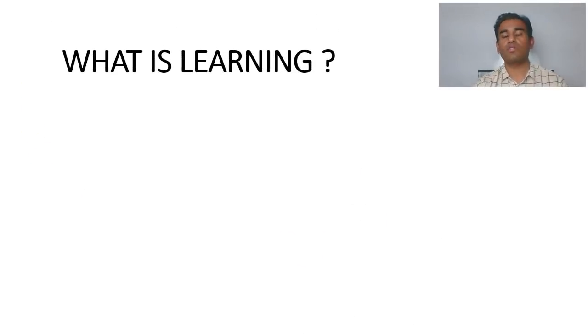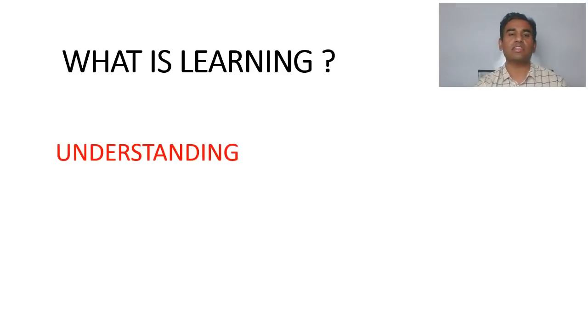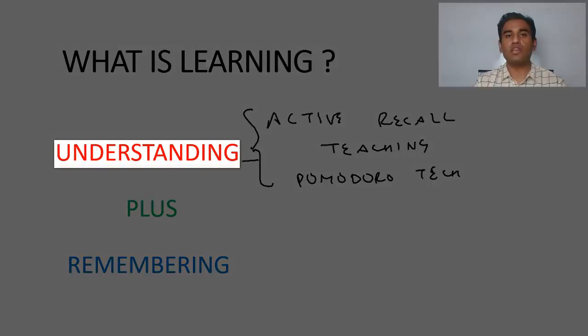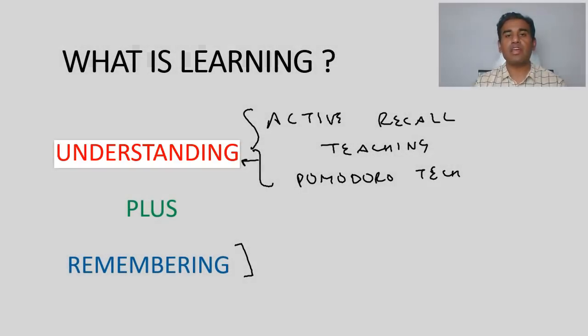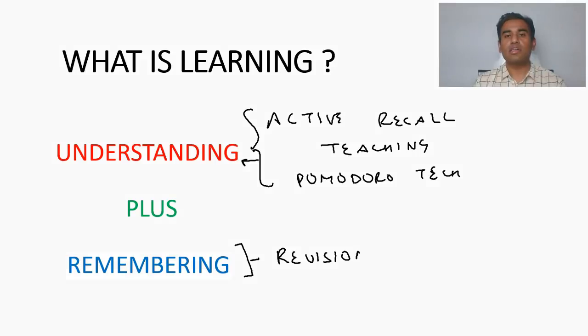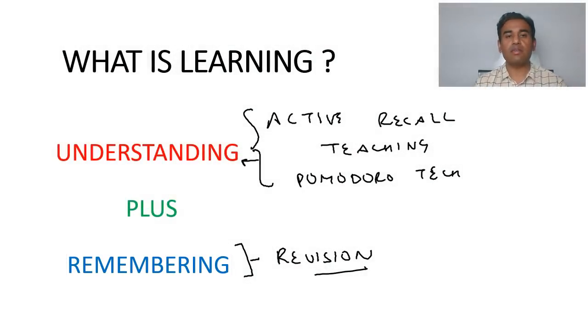Now before moving ahead, let's see what we learned in the beginning. That was what is learning. Learning we discussed was essentially understanding and remembering. Till now we discussed about few techniques that were active recall, that were active recall and which was supplemented by some teaching if it is possible, and your regularity and consistency by this Pomodoro technique. If you can do these techniques, then they all are going to supplement your understanding. Now the only point left is, after understanding any topic, you need to revise to remember it later on. So for revision and remembering, we have a special technique that is known as spaced repetition.